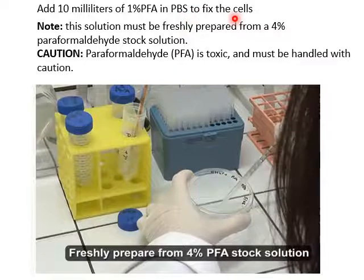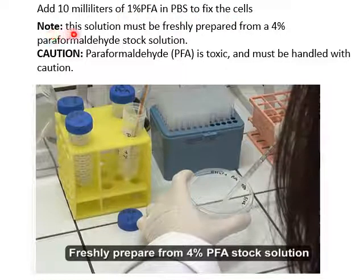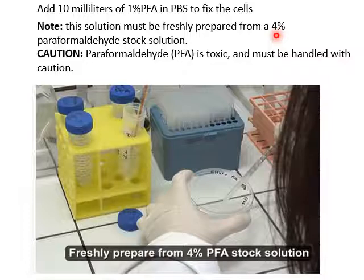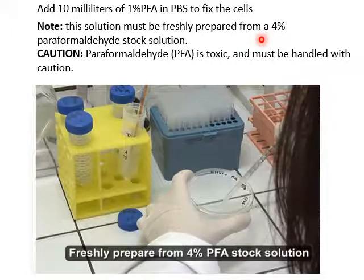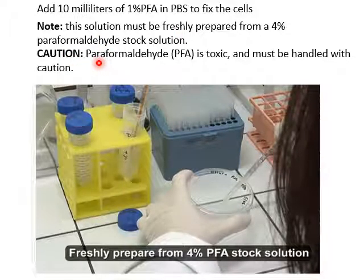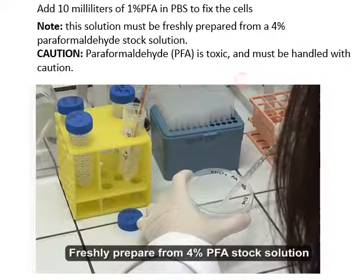Next, we add 10 ml of 1% paraformaldehyde (PFA) prepared in PBS to fix the cells. Note that this solution must be freshly prepared from a 4% paraformaldehyde stock solution. Be careful — paraformaldehyde is toxic and must be handled with caution.